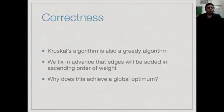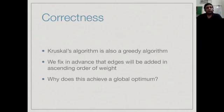Kruskal's algorithm is also a greedy algorithm. In Prim's algorithm or Dijkstra's algorithm, we make incremental local choices at every point, looking at what to do next based on what we know now. Here, we make a choice well in advance: right at the beginning we sort all the edges and process them in that order. It is not immediately clear why doing it in this particular predetermined order gives us an overall optimum solution.